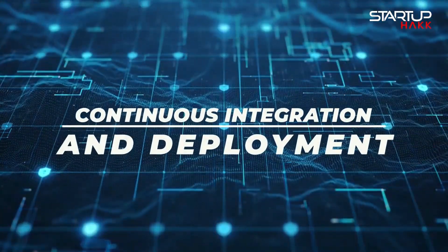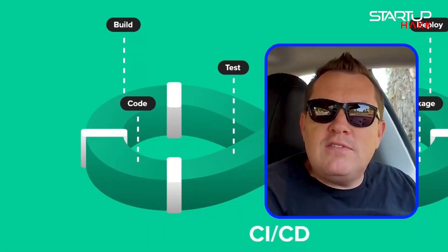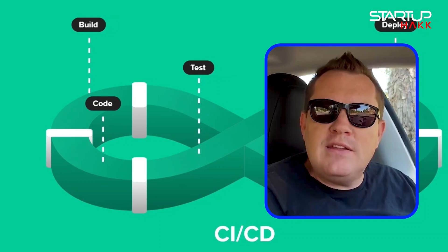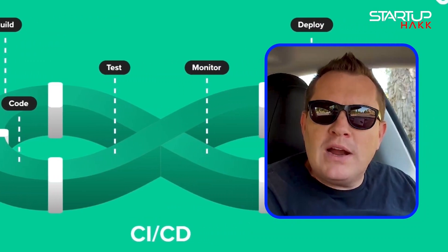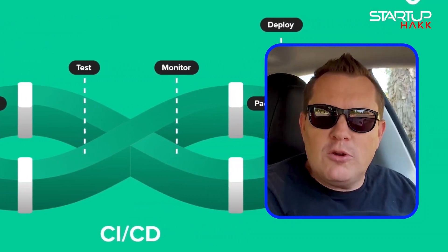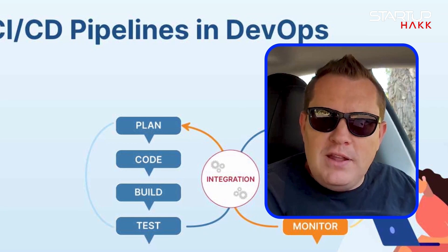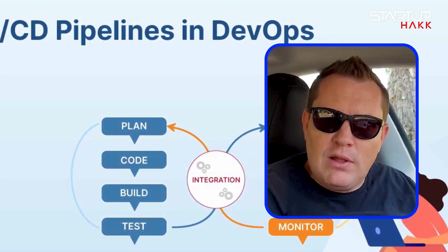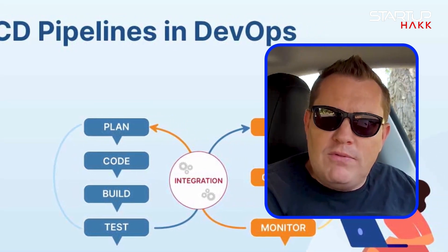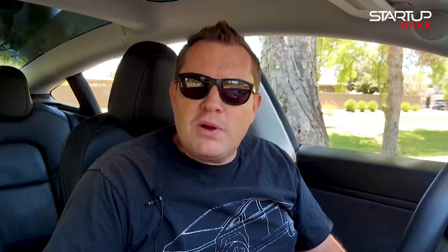5. Continuous Integration and Continuous Deployment. Implementing CI/CD practices ensures that your code is always in a deployable state. CI/CD automates the testing and deployment process, allowing for rapid and reliable delivery of new features and bug fixes. This practice helps maintain the stability of the production environment and accelerates the development cycle, helping speed up and overall improve your coding development.